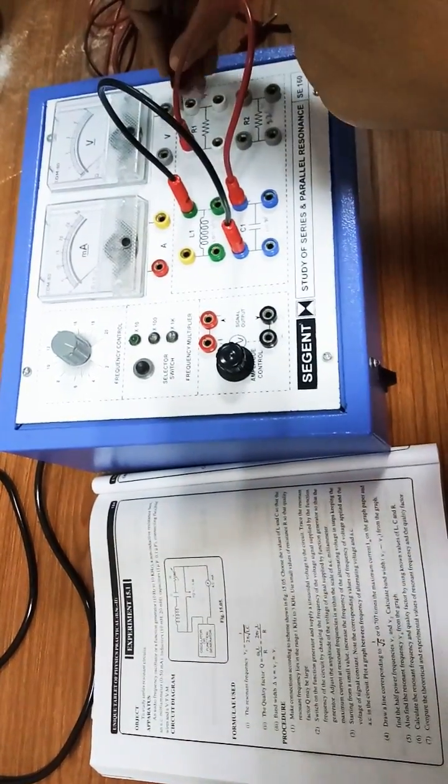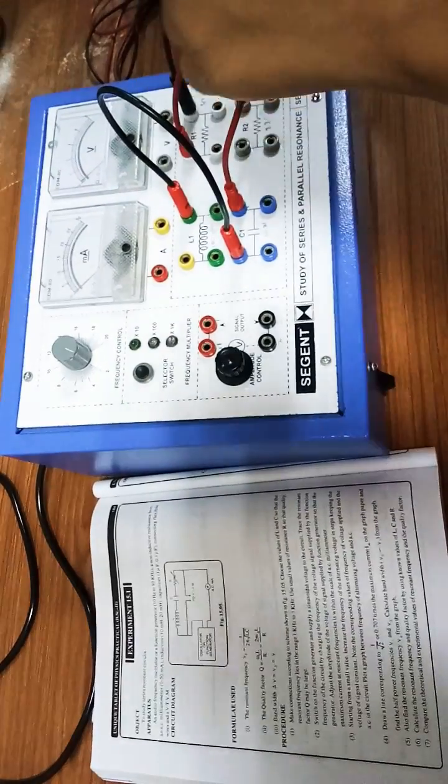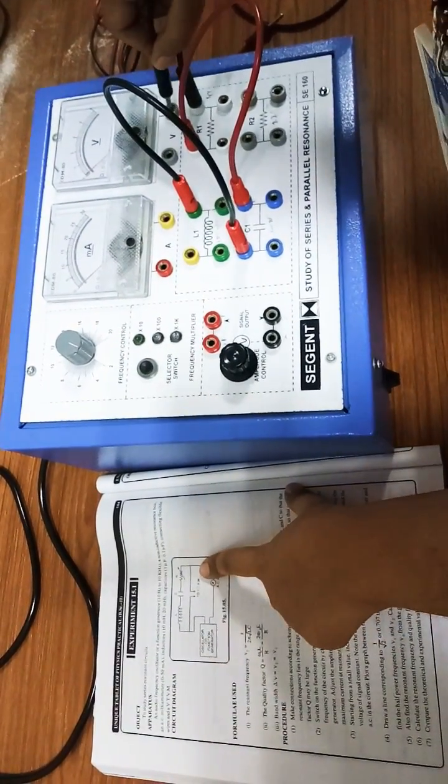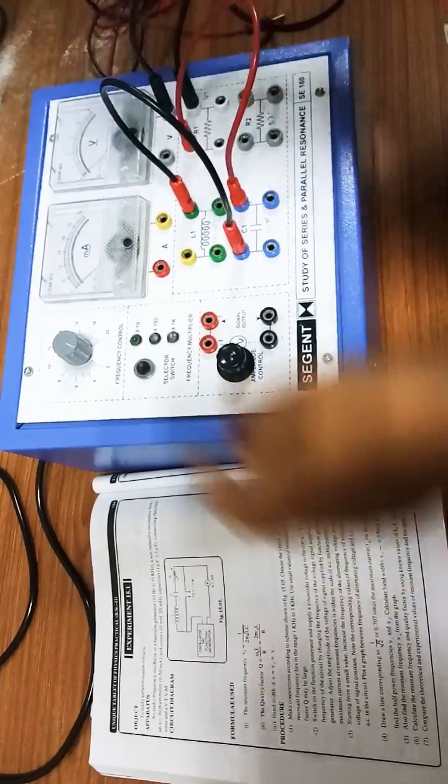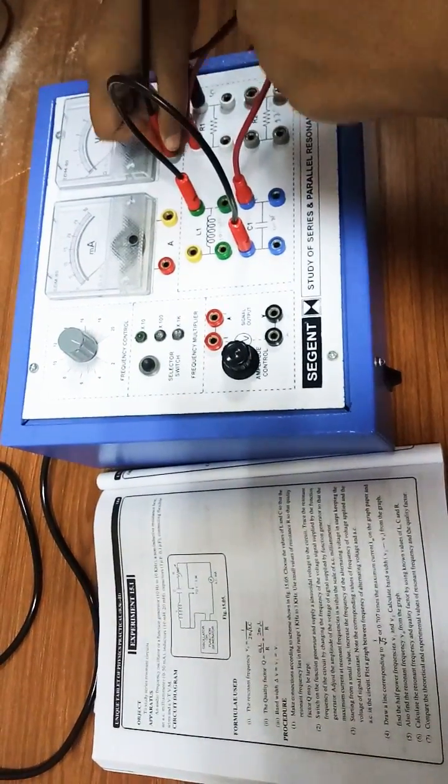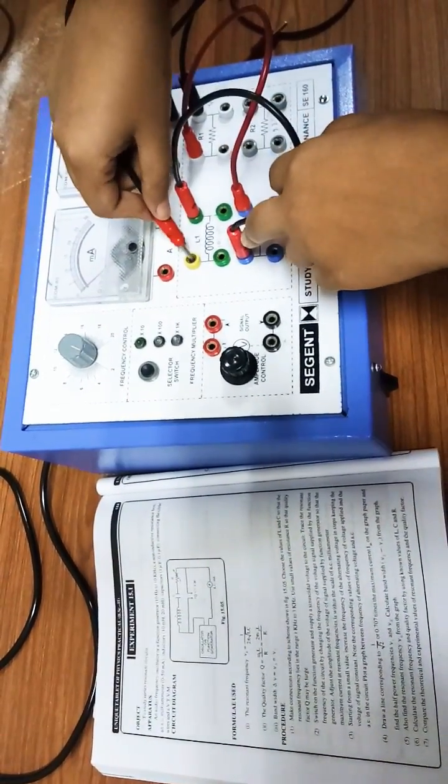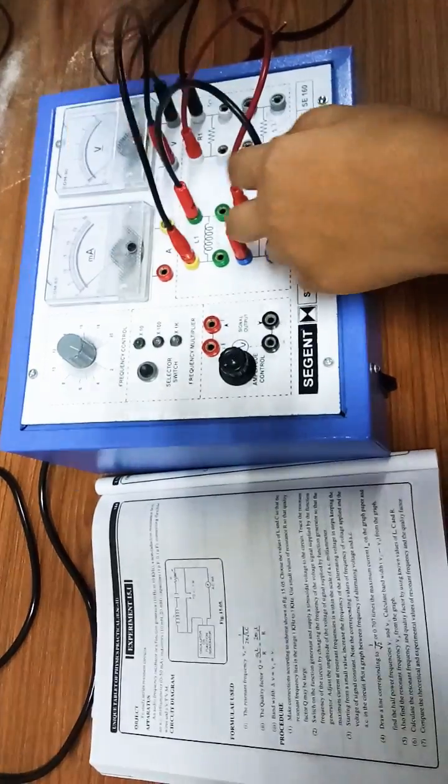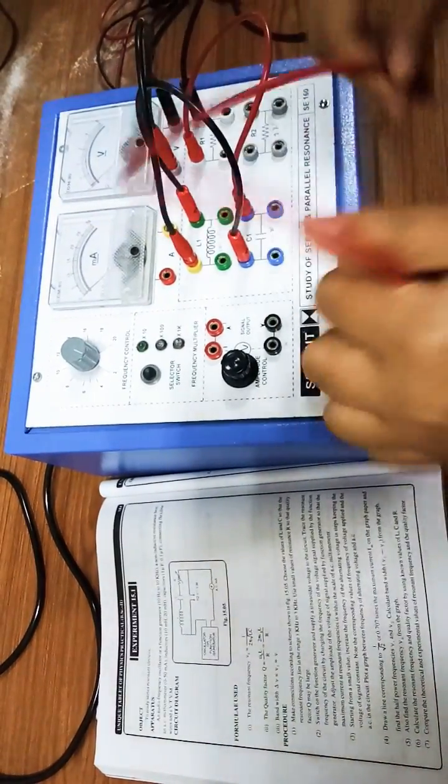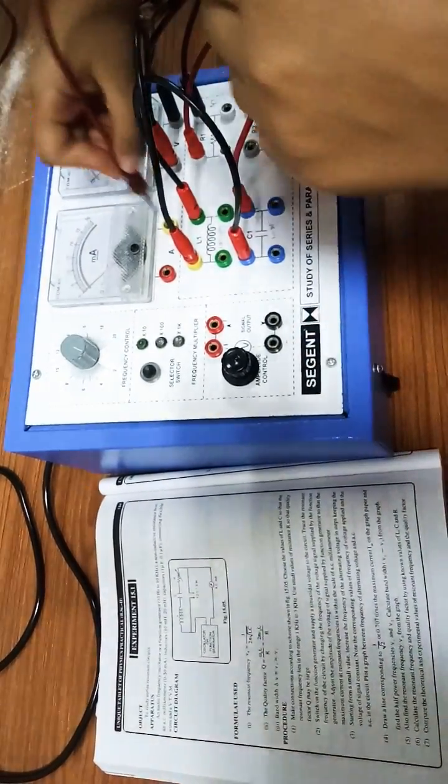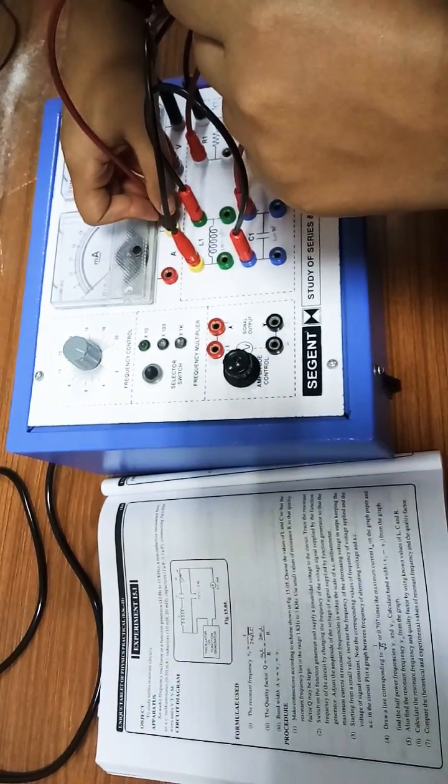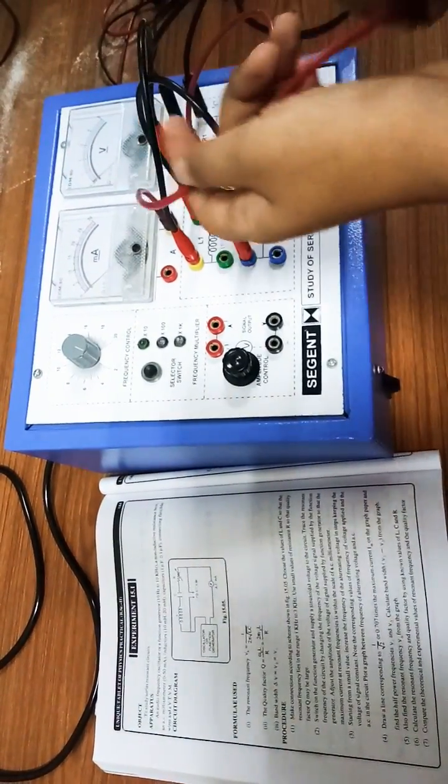Then the second of the variable resistor is connected to the second of the voltmeter, and then the first of the voltmeter is connected to the first of the inductor. Secondly, we'll go to the emitter. The second of the emitter is connected to the second of the rheostat.